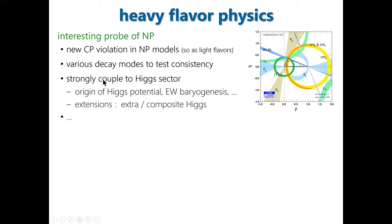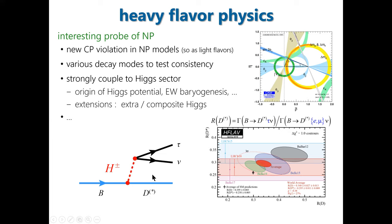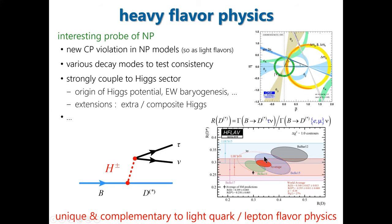Heavy hadrons are in general strongly coupled to the mysterious Higgs sector, so they may give us hints on the origin of the Higgs potential and electroweak baryogenesis. Many new Higgs models propose extensions of the Higgs sector such as extra Higgs multiplets and composite Higgs paths. One example is the B→D*τν decay, where the heavy bottom, charm, and tau lepton are strongly coupled to a charged Higgs predicted by supersymmetry. There is a long-standing tension between the Standard Model and experimental measurement in the ratio between the tau and light-lepton channels. Heavy flavor physics provides unique probes of new physics complementary to those from light-lepton flavor physics.